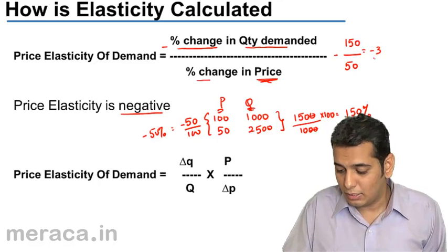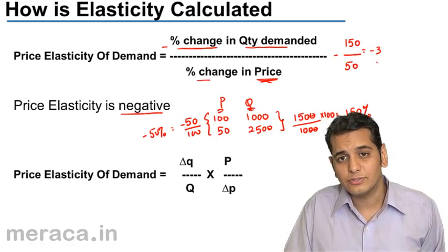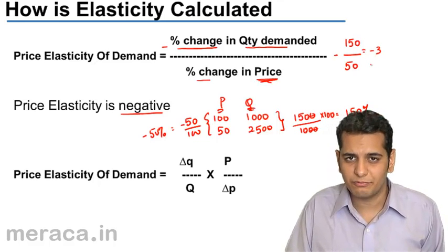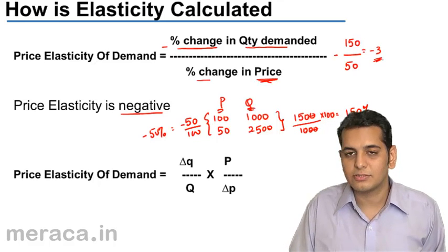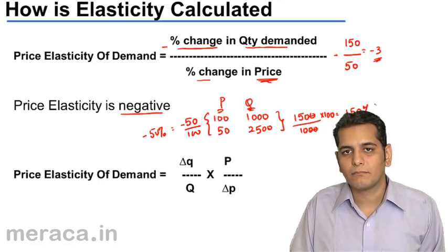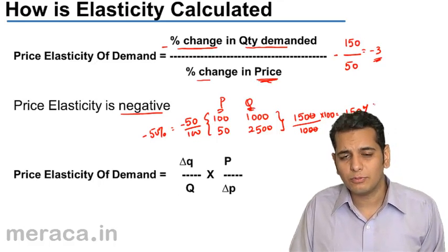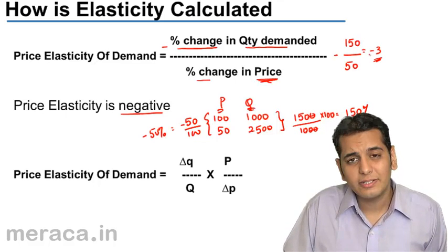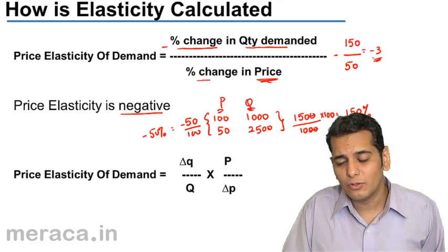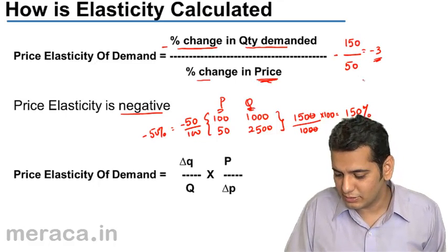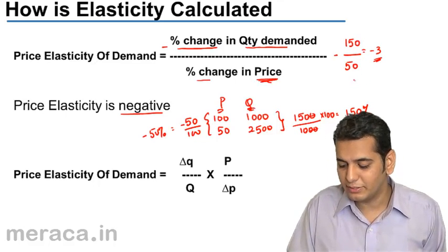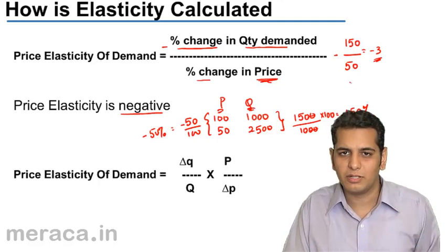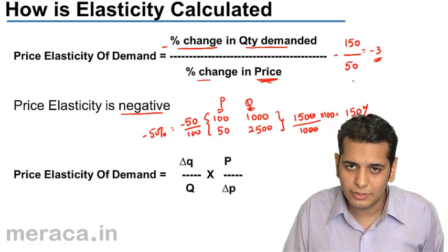In this case, the price elasticity of demand is minus 3. However, we generally tend to ignore the minus sign and say that the price elasticity of demand is 3.